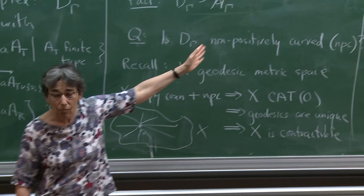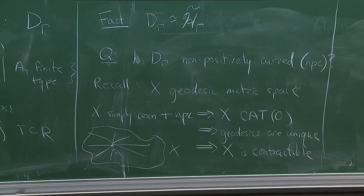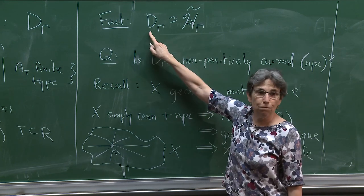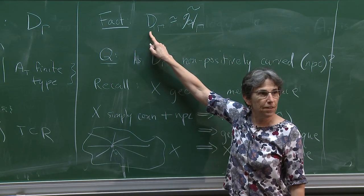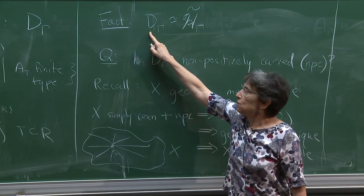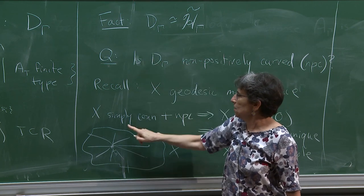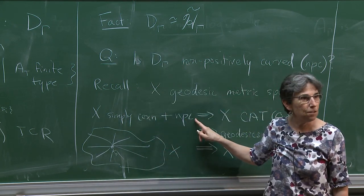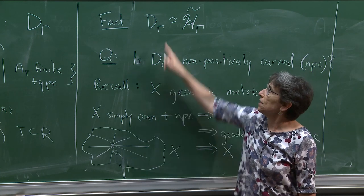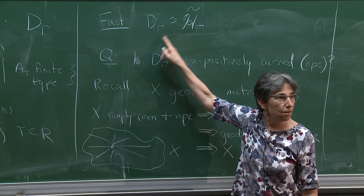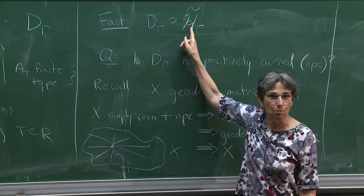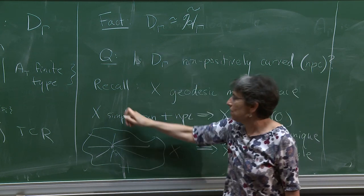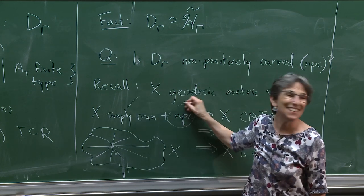That is actually what I want: contractibility. I would like to prove D(γ) is contractible — that's the K(π,1) conjecture. So it suffices to prove D(γ) is simply connected and non-positively curved. I already know simply connected, since it follows automatically from being homotopy equivalent to a universal cover.